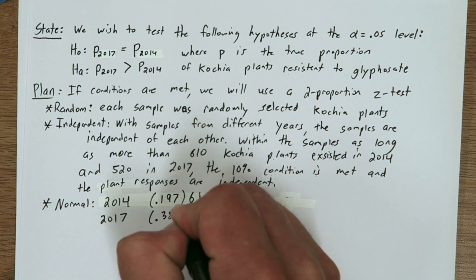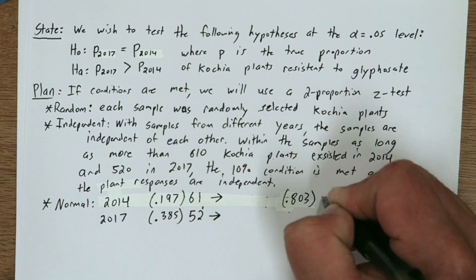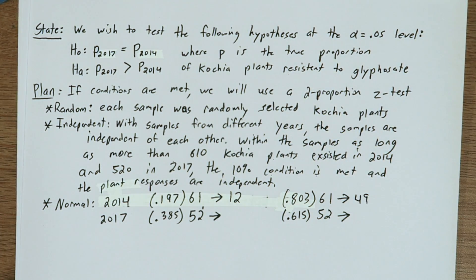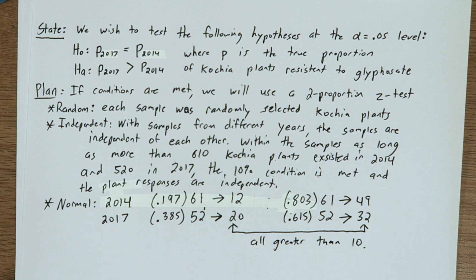For the normal condition, we have to have at least 10 successes and failures in each year. We do, at 12, 49, 20, and 32.